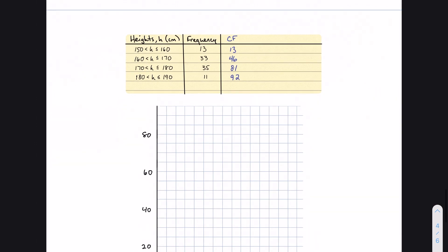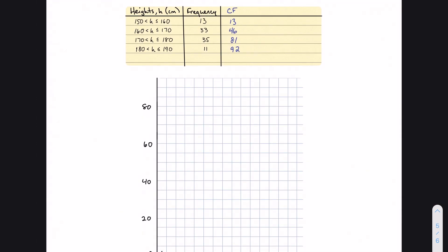I'm going to zoom out a little so we can see everything. And again, my lowest point, my x-intercept, is the lower bound of the lowest interval class. So I'm going to start this graph at 150, 0. That's to say that none of the data falls below 150. And then I'm going to use my upper bounds of each data class for the rest of my points. So 160, 13. My point is going to be 160, 13, so about here. I'm going to have 170, 46, about there. And that's 180, 81. And then I'm going to have 190, 92, so about here.